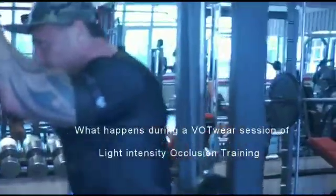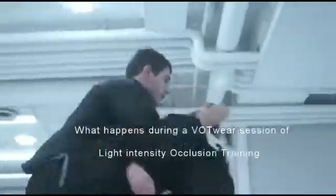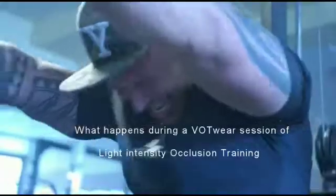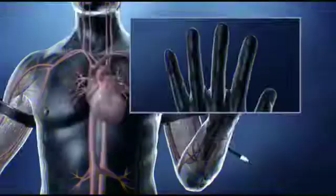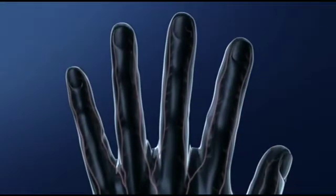So what actually happens within us during a VO2 wear session of light intensity occlusion training? Occlusion training is the act of maximizing blood flow to the working muscle by active exercise while minimizing the venous return out of the same muscle using specific localized pressure.